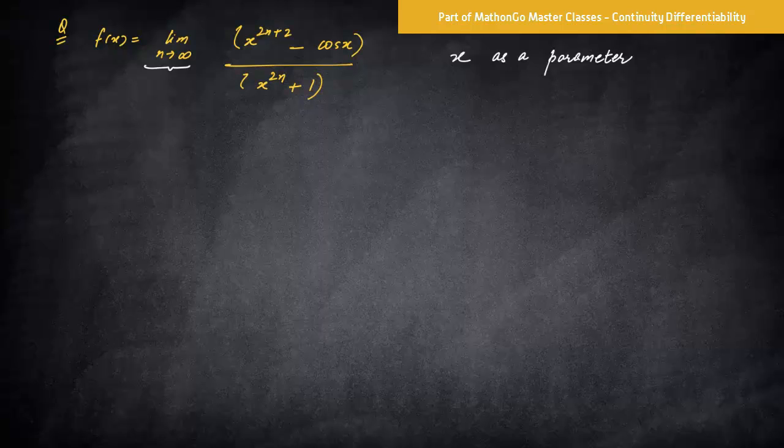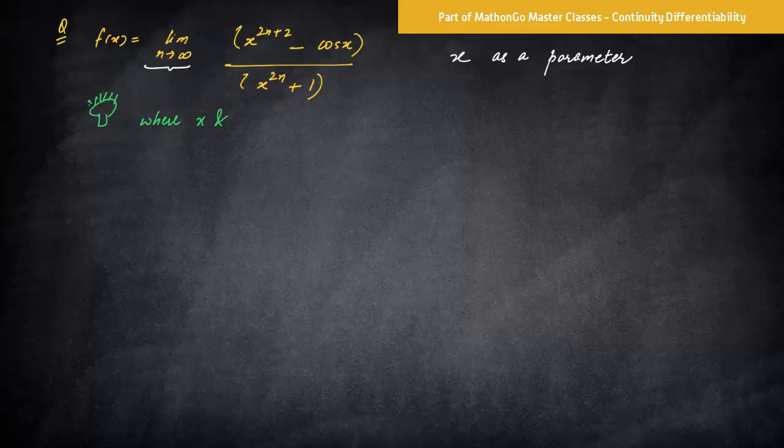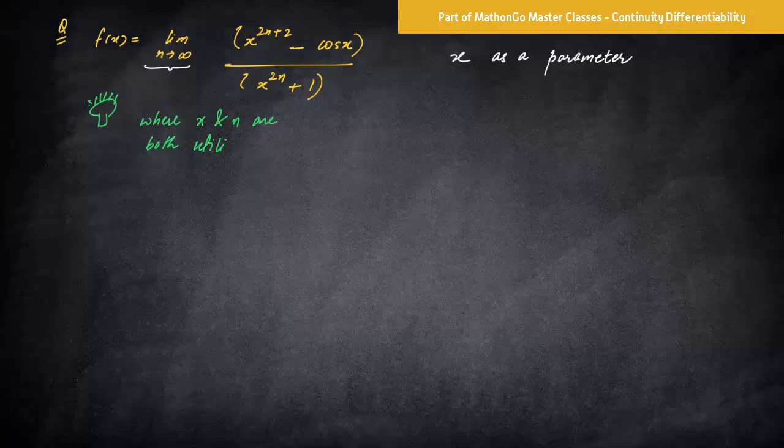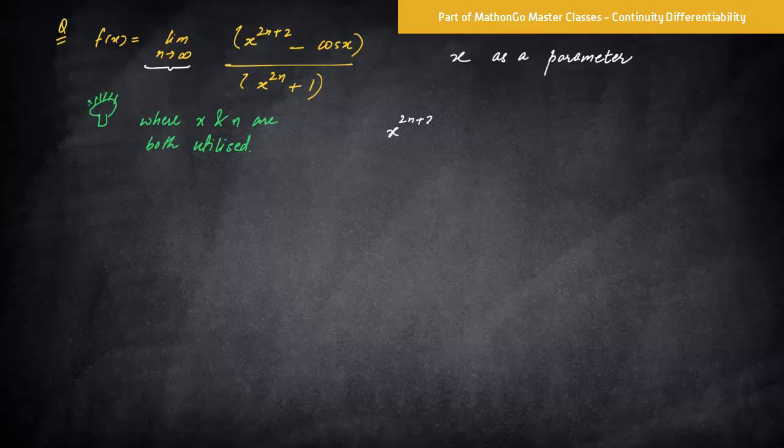Now where x and n both are getting utilized. The idea to think about these kinds of problems is where x and n are both utilized, right, at the same time. So where they are both utilized, let's see first of all. So it is x raised to power 2n plus 2, and here it is x raised to power 2n.